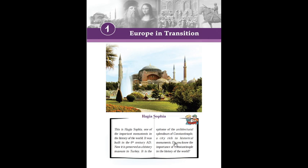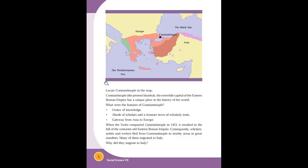Constantinople is a city rich in historical monuments. Here on the map you can locate Constantinople near the Black Sea and Mediterranean Sea, at the junction of Europe and Asia. Constantinople was the capital of the Eastern Roman Empire.